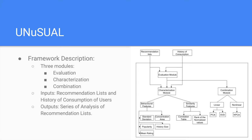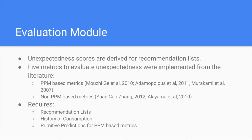Let's talk about the evaluation module. The unexpectedness metrics are executed, deriving scores for each user and for each recommendation list. For this framework, we implemented five unexpectedness metrics found in the literature. Three metrics require a primitive prediction method, which is a predictor that issues expected recommendations. These three metrics are proposed by Gao et al., Adamopoulos et al., and Murakami et al., respectively. The other two metrics are not based on a primitive predictor — they are based on distinct principles, proposed by Jung et al. and Akiyama et al., respectively. The inputs for this module are the recommendation lists, primitive predictors, and any other necessary information such as the history of consumption.